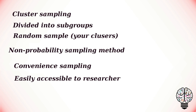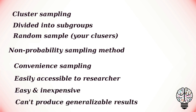Convenience sampling simply includes the individuals who happen to be the most accessible to the researcher. This is an easy and inexpensive way to gather initial data, but there is no way to tell if the sample is representative of the population, so it can't produce generalizable results. For example, if you are researching opinions about student support services in your university, after each of your classes you ask your fellow students to complete a survey. As you have only surveyed students taking the same classes as you at the same level, the sample is not representative of all students at your university.